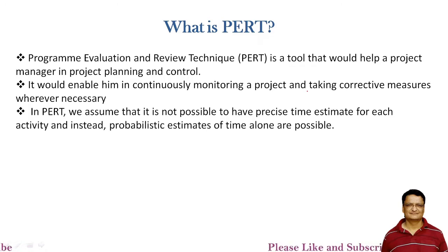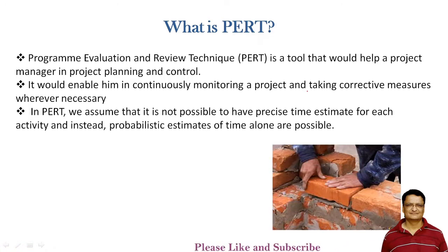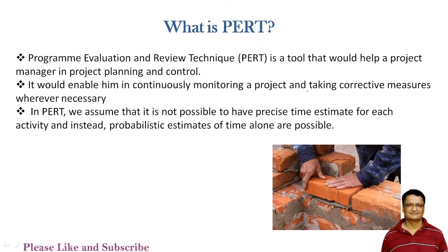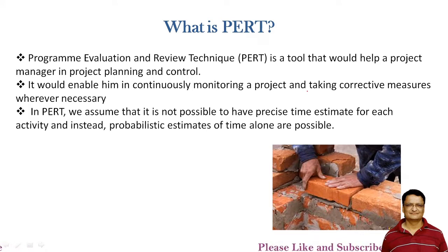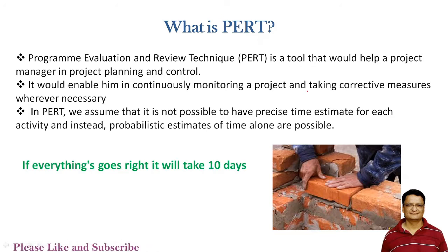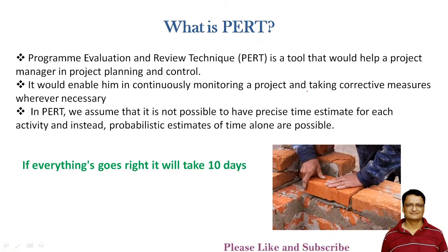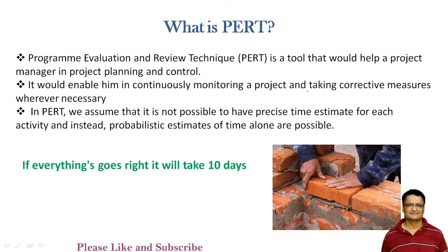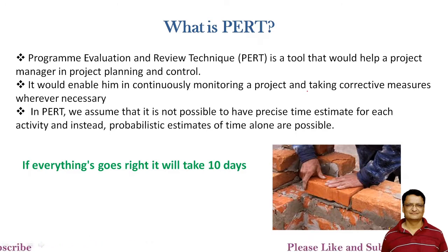In CPM, we assume a certain activity — for example, constructing the walls — will take a certain fixed time. But it may not happen every time that you can complete the given activity within the stipulated time. There are a lot of variables due to which the activity time may vary. For example, if everything goes right — material is supplied on time, laborers are available, there are no delays — it may take 10 days.